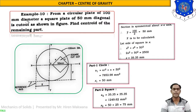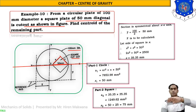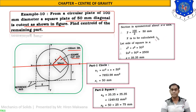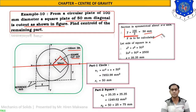Example 10: From a circular plane of 100 mm diameter, a square plate of 50 mm diagonal is cut out as shown in the figure. The circle has 100 mm diameter and the square to be cut out has a 50 mm diagonal. The section is symmetrical about the x-axis, so y-bar = height/2 = diameter/2 = 100/2 = 50 mm. x-bar remains to be calculated.